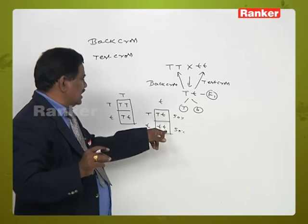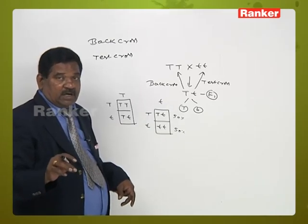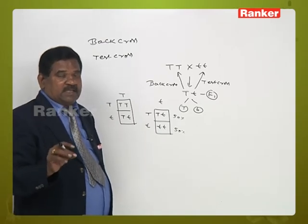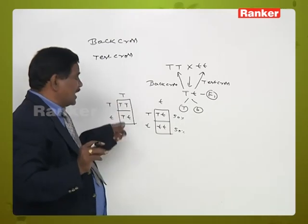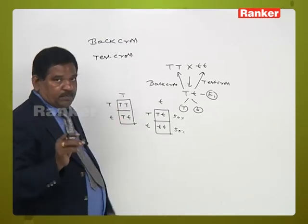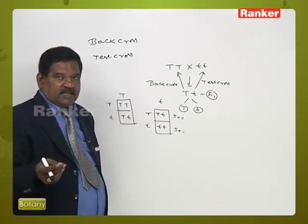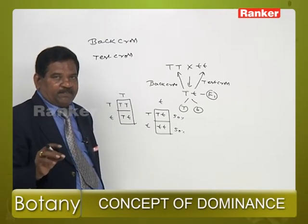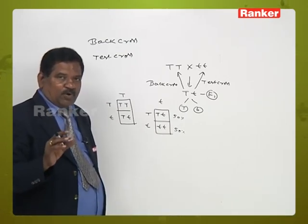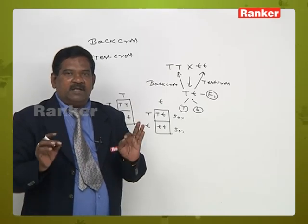The phenotypic ratio of testcross is 1:1 — 50% tall and 50% dwarf. The genotypic ratio of testcross is also 1:1. In a backcross, the phenotypic ratio is all tall (2:0), while the genotypic ratio is 1:1. So in both backcross and testcross in a monohybrid cross, the genotypic ratio is the same 1:1. The backcross is conducted mainly to produce all dominant characters.